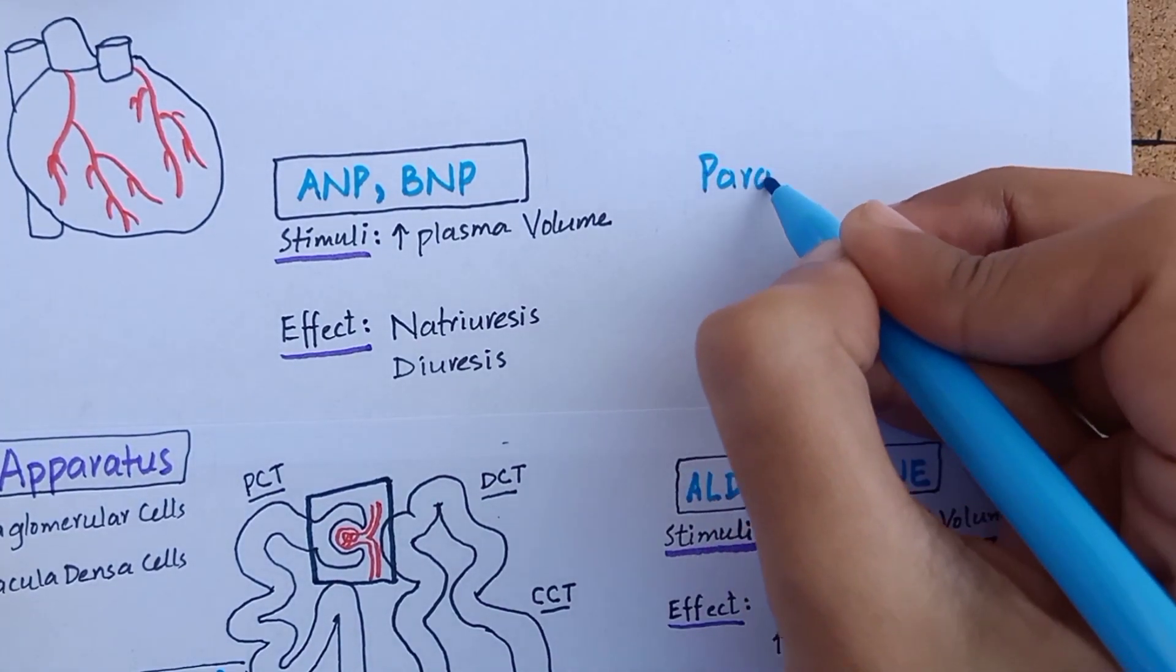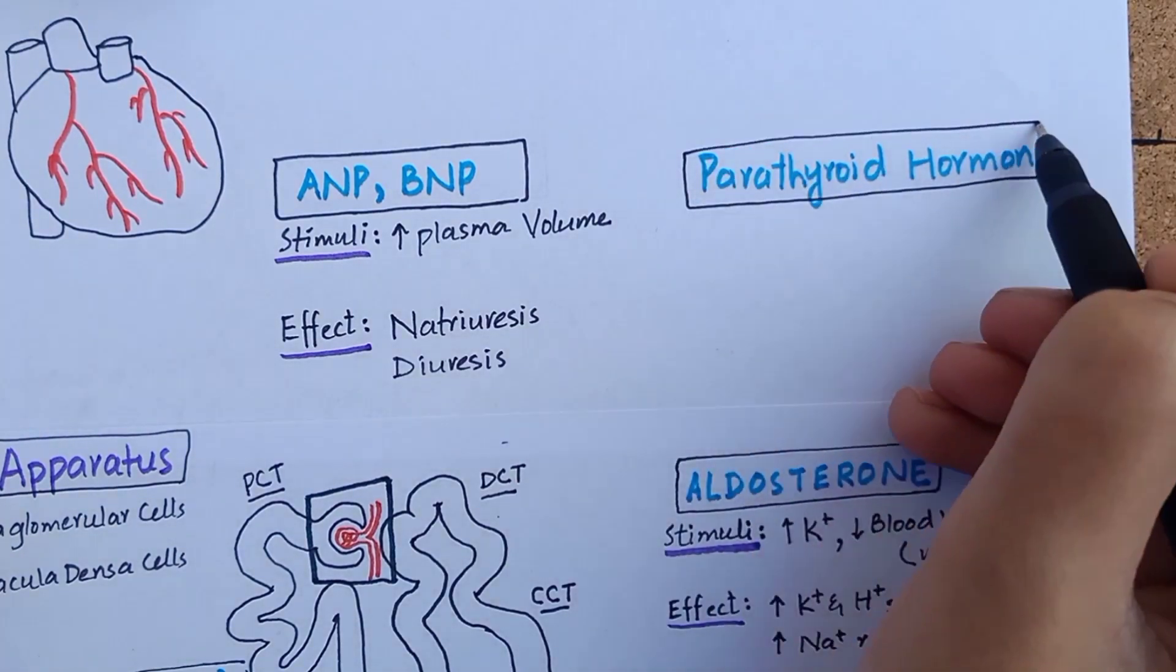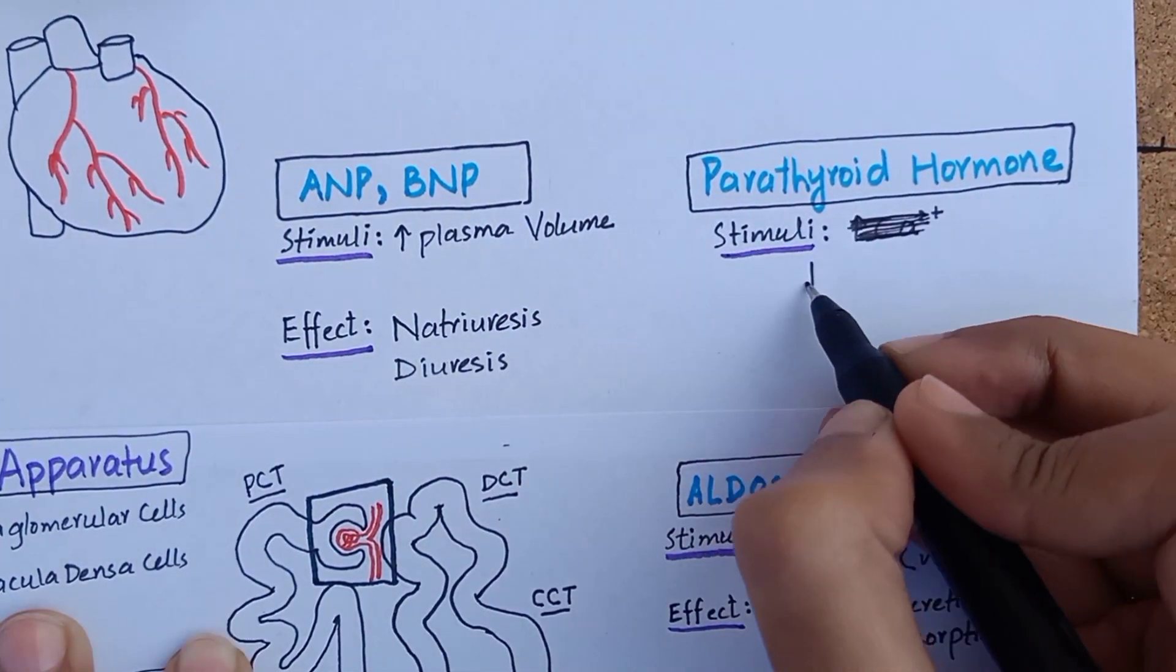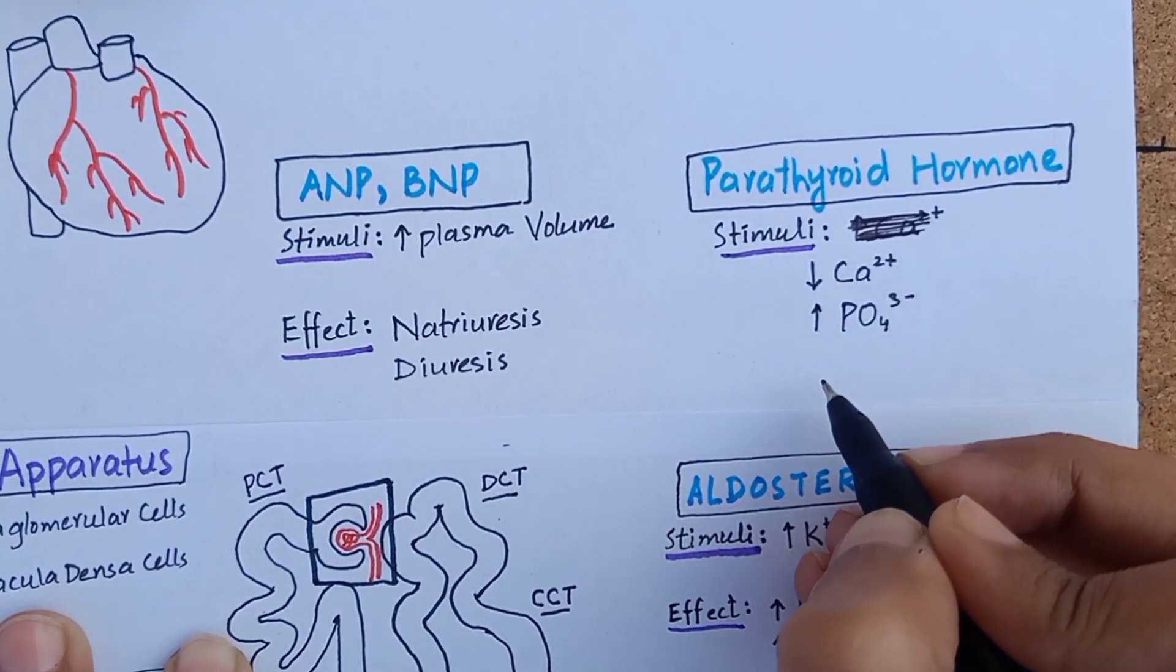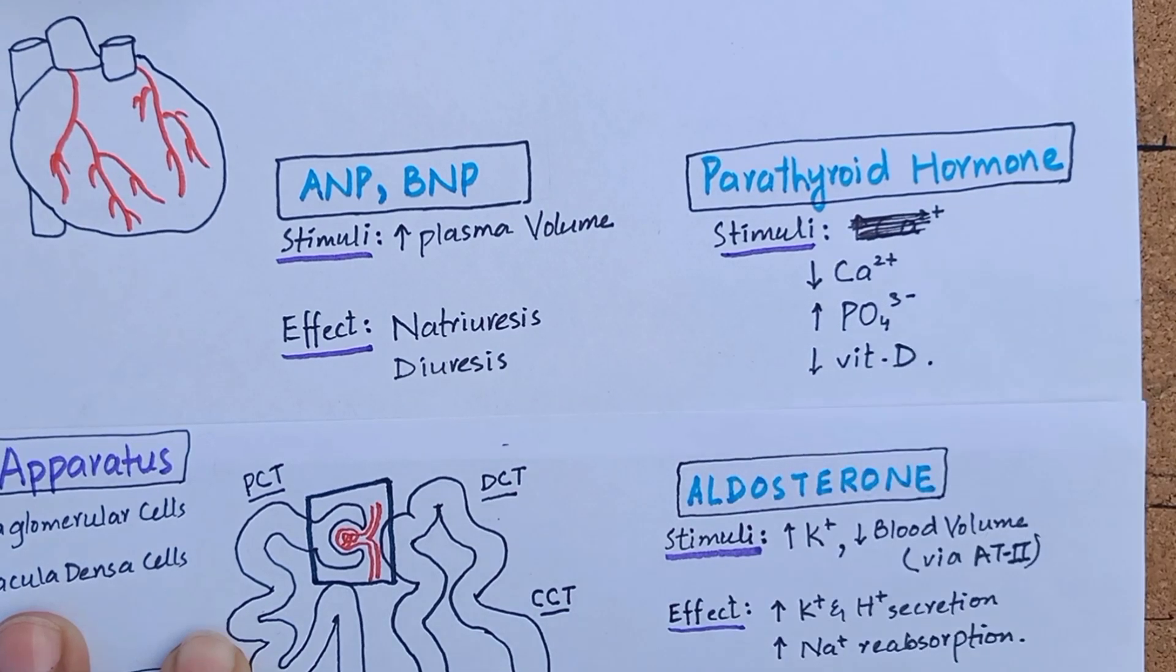The last one among these hormones is parathyroid hormone. It is one of the most important calcium-regulating hormones in the body. Parathyroid hormone is secreted in response to low plasma calcium, and its principal action in kidney is to increase calcium reabsorption in distal convoluted tubules.